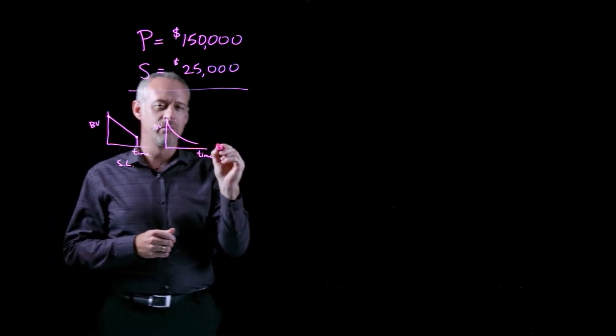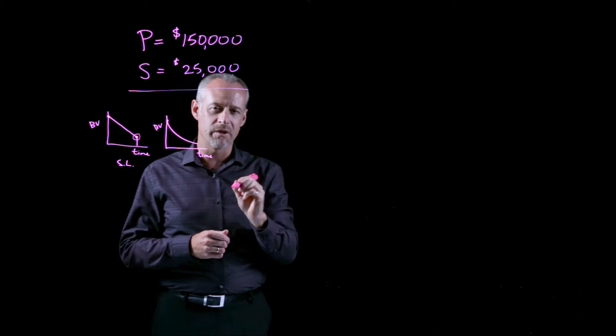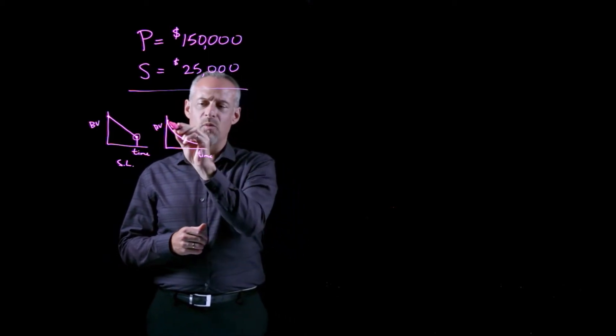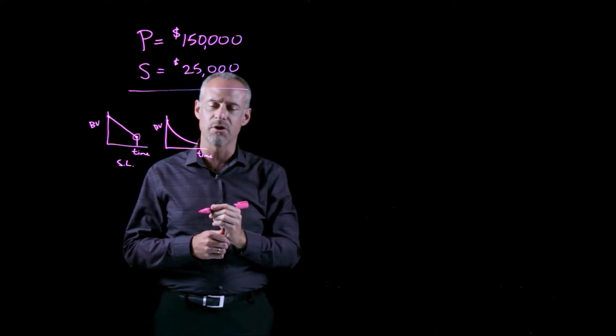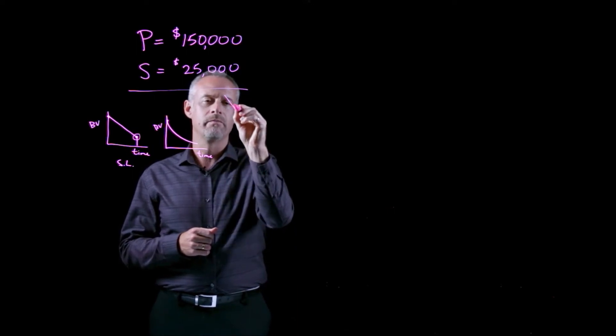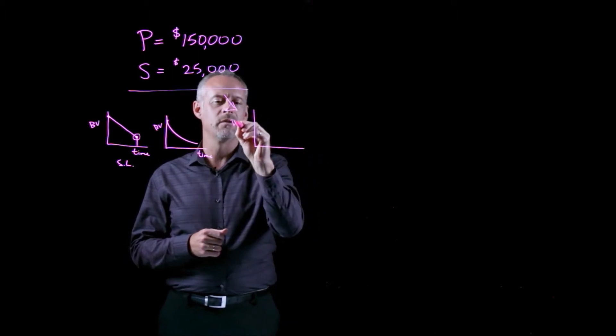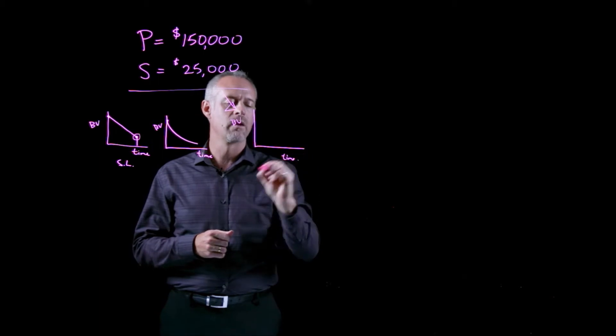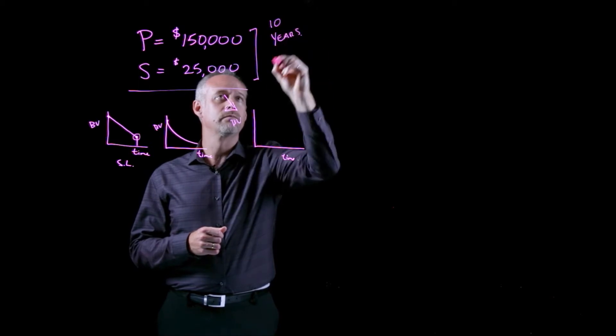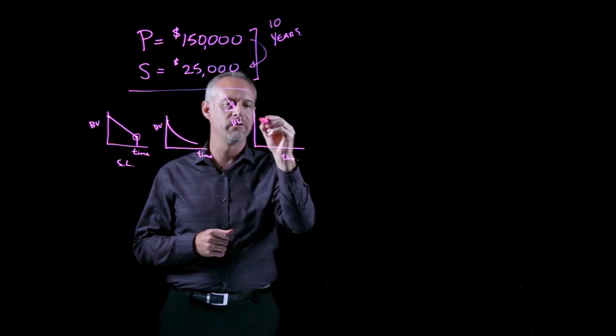In this problem, we kind of have both things to deal with. We're given a specific salvage value at some point in the future, but we're told that we have to use some declining balance depreciation rate to arrive at that number. So what we're trying to do in this problem, we have the same idea, book value versus time, and we're told after 10 years, we go from a $150,000 value to $25,000 as a salvage value.